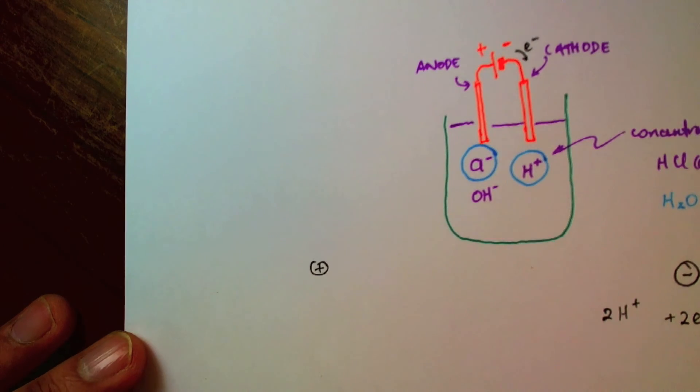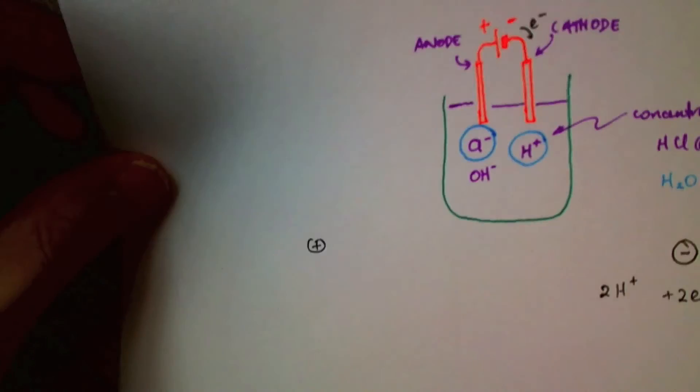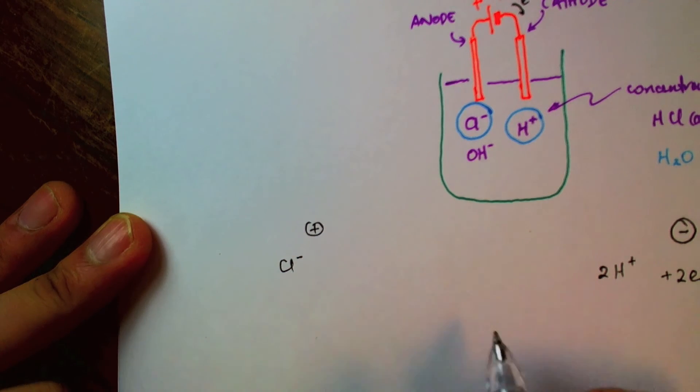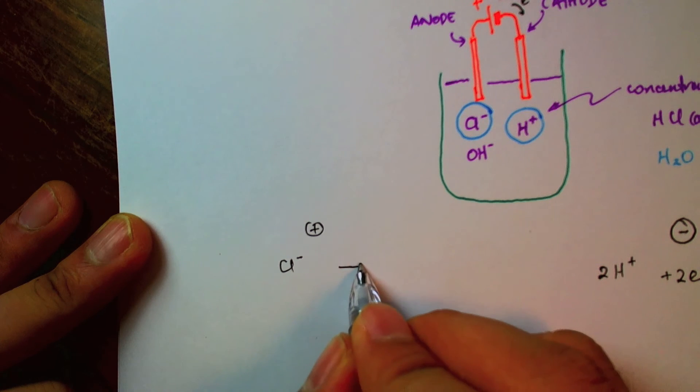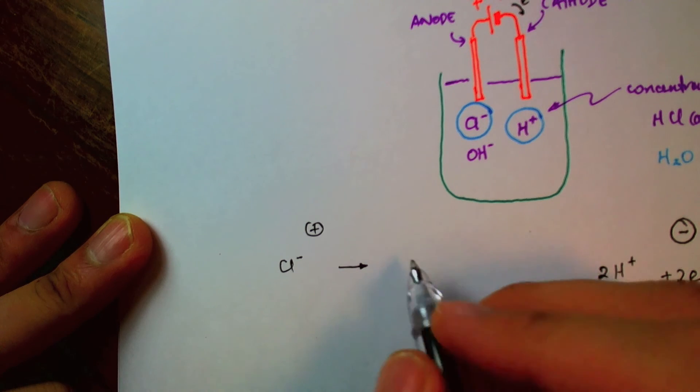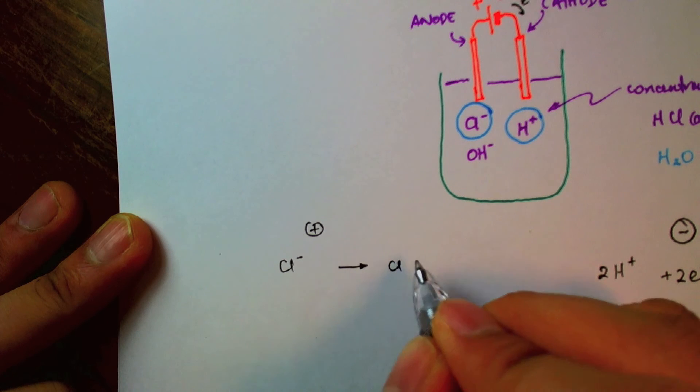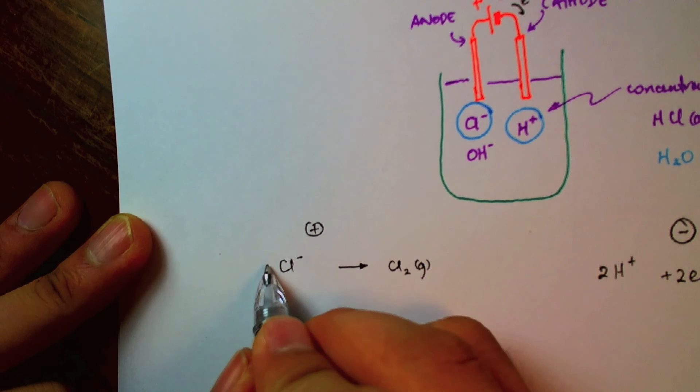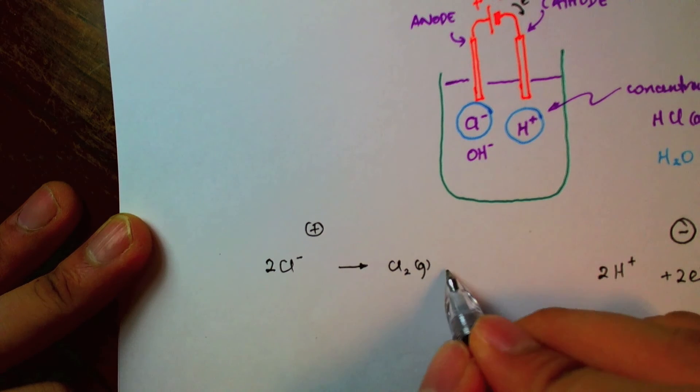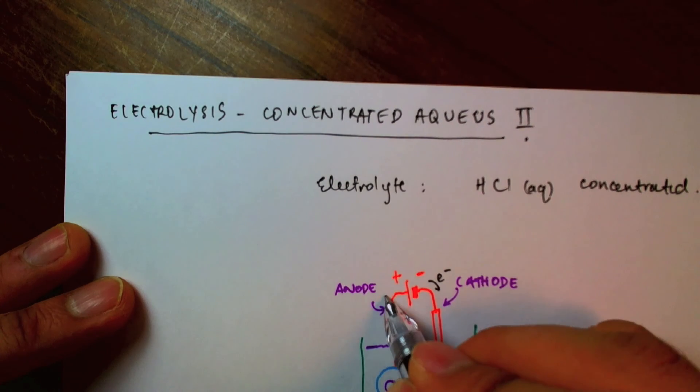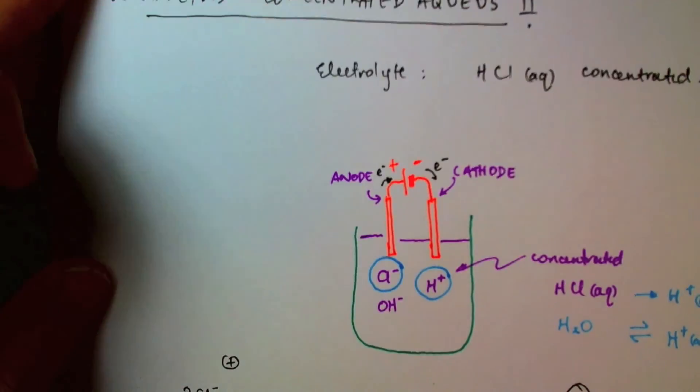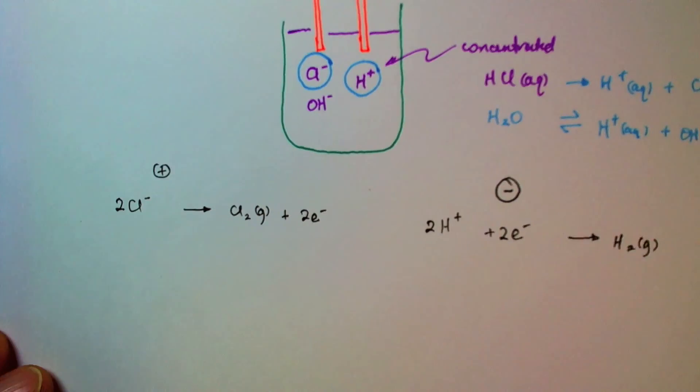At the anode, chlorine is discharged. So chlorine will have to give up its electrons because hydroxide doesn't want to. And it will form chlorine gas, which is, again, diatomic. So I need two of these. And that will give me two electrons given up. And these electrons will travel back to the cell. So those are my two half equations.